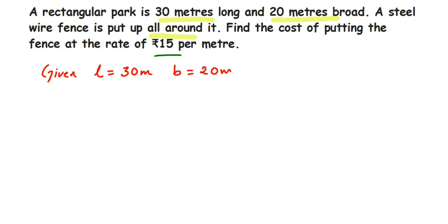the perimeter of the rectangular park. Perimeter equals 2 times (l plus b). We know the length and breadth, so we'll substitute here. This equals 2 times (30 plus 20), which is 2 times 50. Now we don't have a multiplication sign here, but we